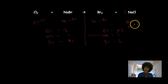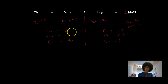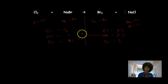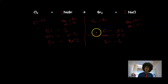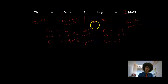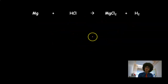Starting with chlorine: I have 2 on the left and 1 on the right, so I add another NaBr, giving 2 chlorines, 2 sodiums, and 2 bromines on the right. Updating: sodium is now 2 on the right vs. 2 on the left. Checking: Cl = 2 and 2 (balanced), Na = 2 and 2 (balanced), Br = 2 and 2 (balanced). The equation is balanced.